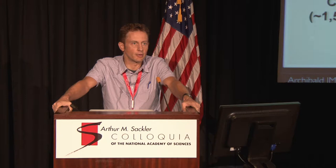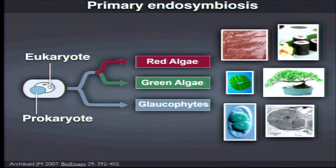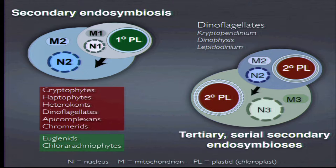There are three main lineages of primary plastid-bearing eukaryotes known today: the red algae, the green algae, and the glaucophytes. The green algae gave rise to land plants. Things are more complicated than that, though — we have the issue of secondary endosymbiosis, where a primary plastid-bearing eukaryote is taken up by a non-photosynthetic host eukaryote and, given enough time, evolves into a permanent organelle.